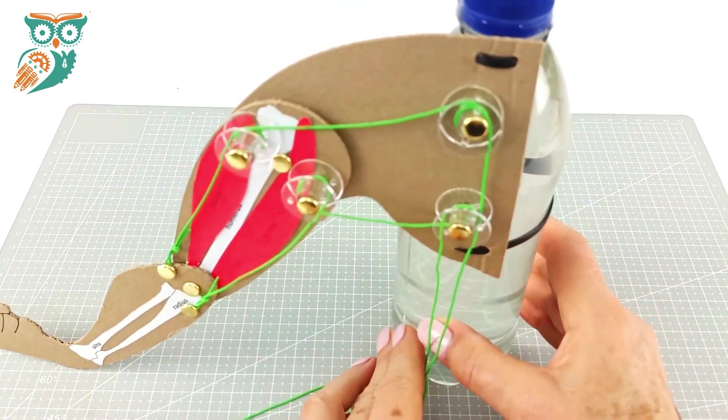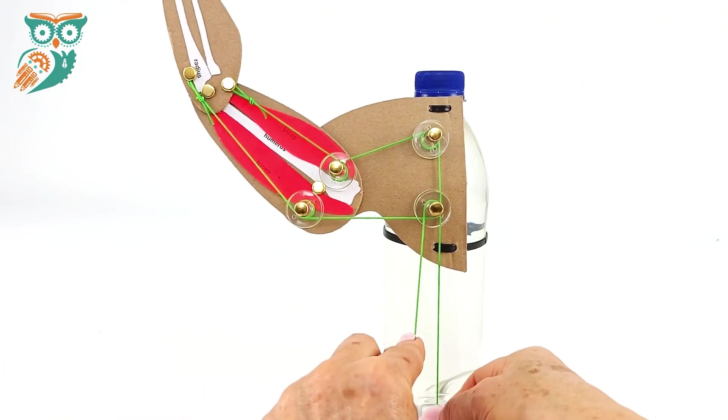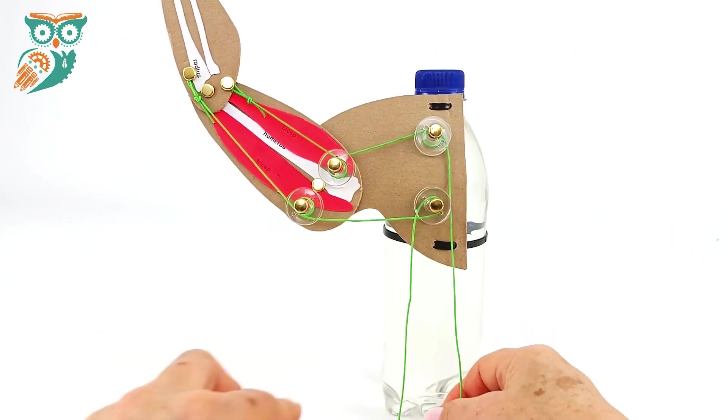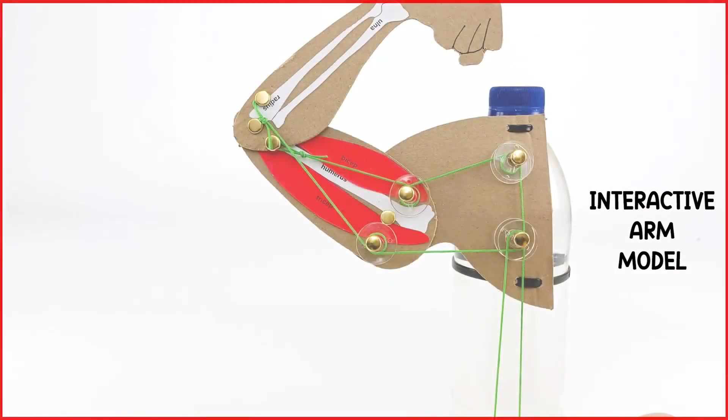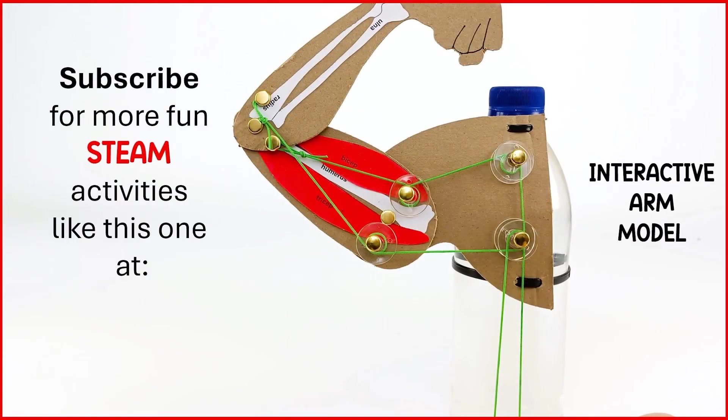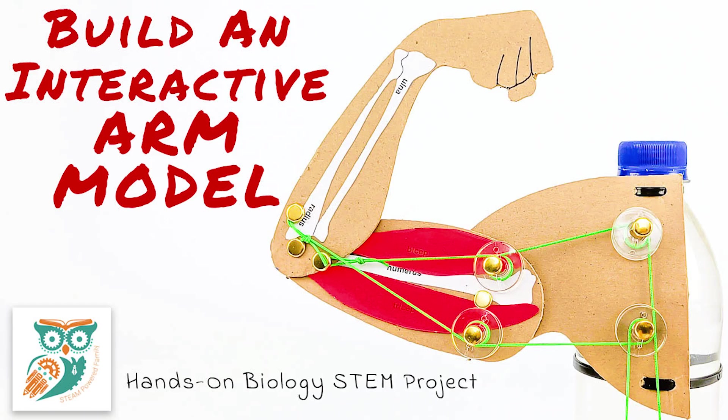And our arm is now ready to move and model how the bicep and tricep help to make the arm move and flex. This is a great biology STEM project for your students. If you need more ideas visit steampoweredfamily.com. Thanks very much. See you soon. Bye.